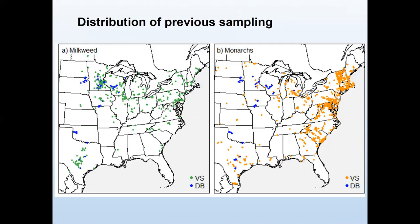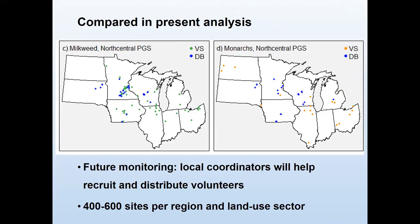If we just try to compare the blue points to the orange points, there would be some obvious problems. So for this analysis I've focused on the upper Midwest where we've got blue, green, and orange points together. This is not what we want it to look like eventually — we hope to eventually have sites spatially balanced throughout the whole continent.